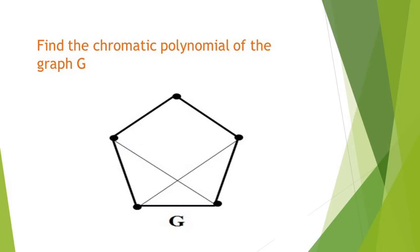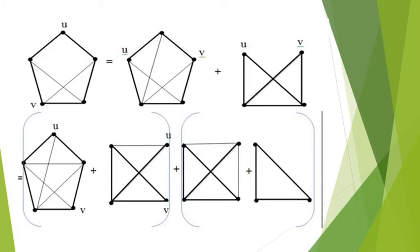Next we look at a problem: finding the chromatic polynomial of a given graph G. We have to use the chromatic polynomial formula: f(G, lambda) = f(G + uv, lambda) + f(HG, lambda).